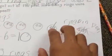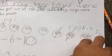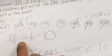And I X'd out three because all three are gone, because it says three children got out of the pool. And 16 take away 6, because 2, 4, 6 equals 10, and my statement was ten rings were left in the pool.